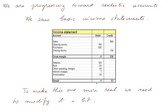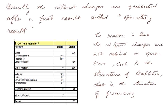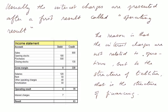To make this income statement more realistic, we need to modify it a bit. Usually the interest charges are presented after a first intermediate result called the operating result. So the 7 is down below this intermediate line. We have an operating result of 70 and the result of 63. The reason is that interest charges are not related to operations, but to the structure of liabilities — whether we have debt or not — that is, to the structure of financing.